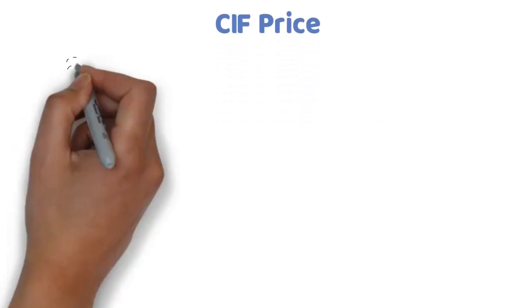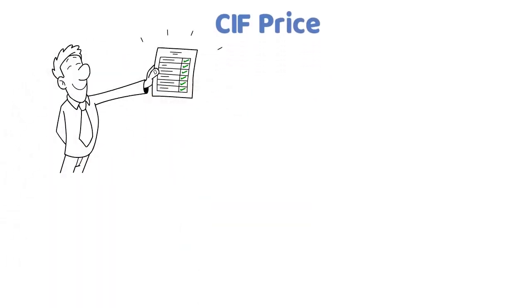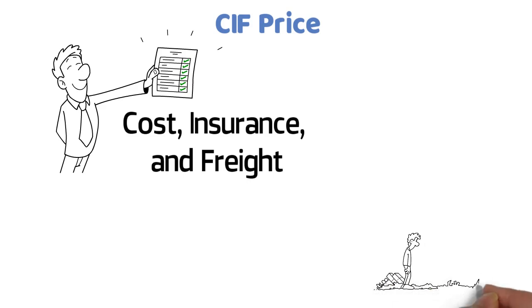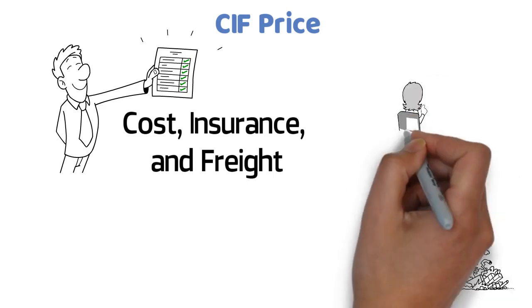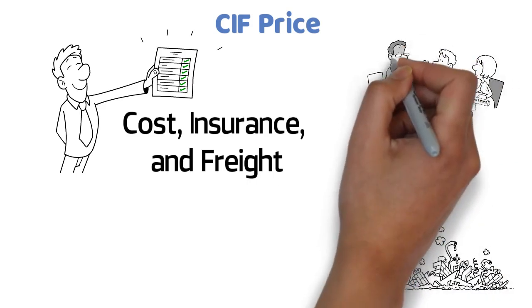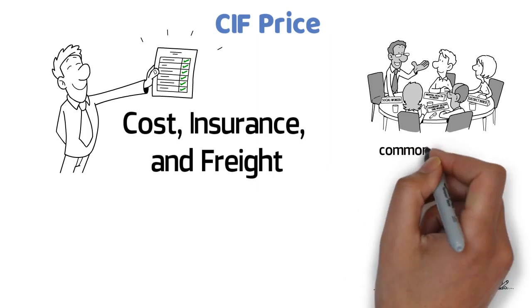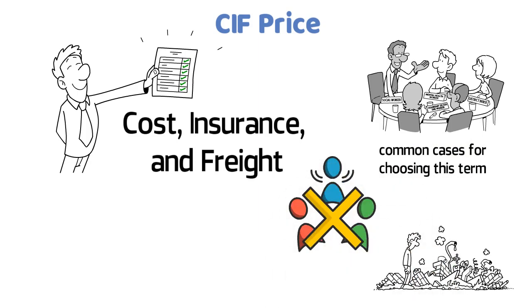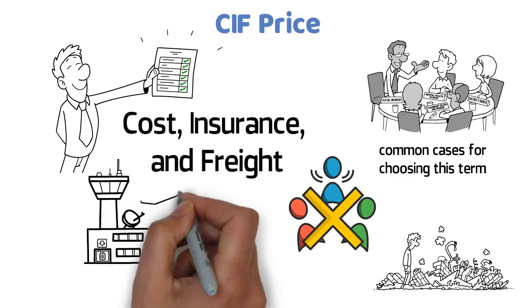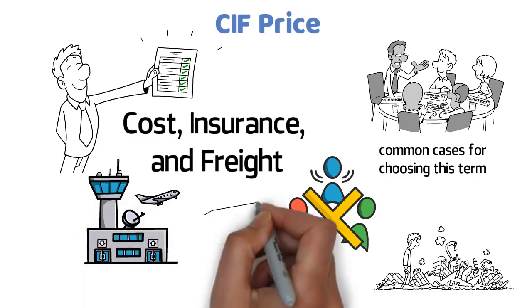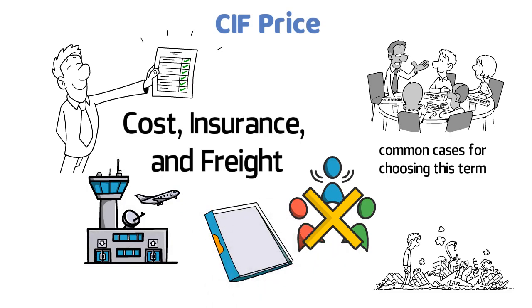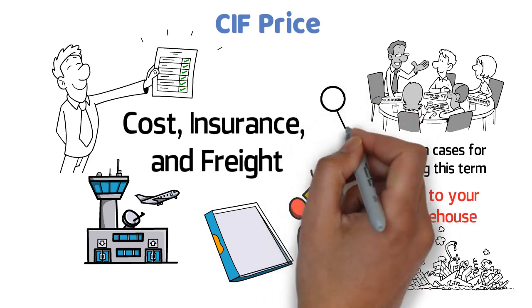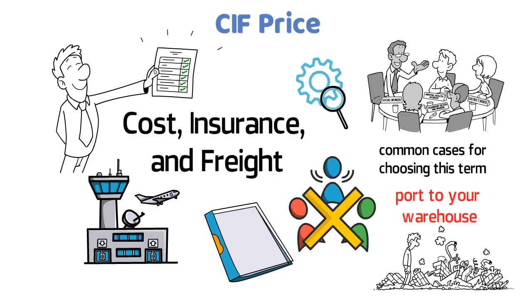Number 3: CIF Price. CIF is also a very commonly used trade term — it's short for cost, insurance, and freight. For the insurance, remember it doesn't cover products damaged during shipping; it only helps when the whole shipment gets lost. You can ask suppliers for the CIF price when you don't have a freight forwarder or don't want to deal with one. They will ship the products to your country's appointed seaport or airport. You'll need to find a local logistics company and customs broker to handle customs clearance and arrange shipping from the port to your warehouse. Notably, the freight cost in the CIF price is just a small part of the total.